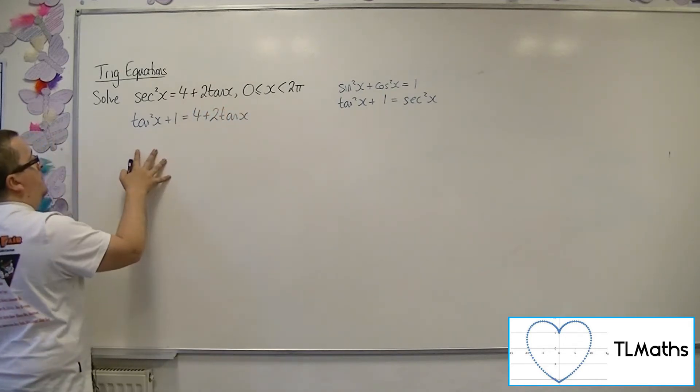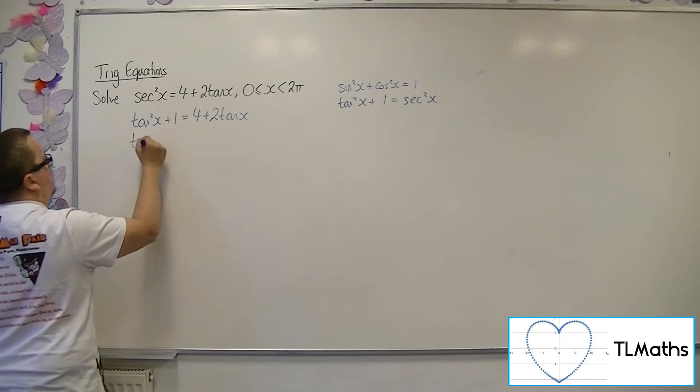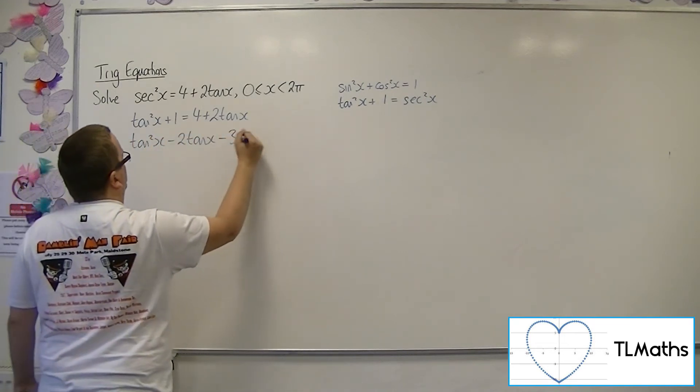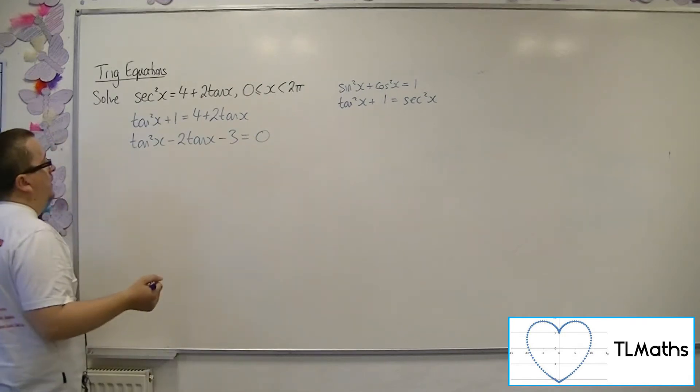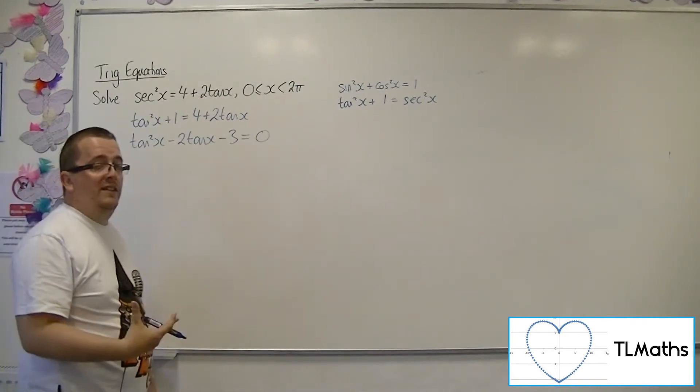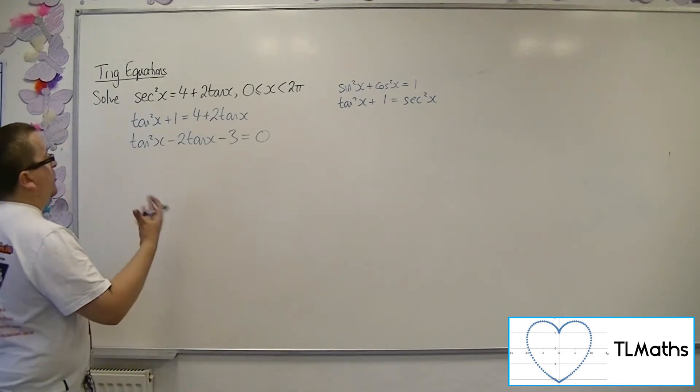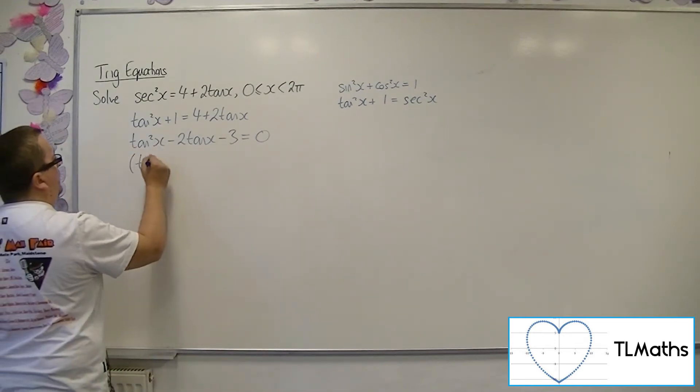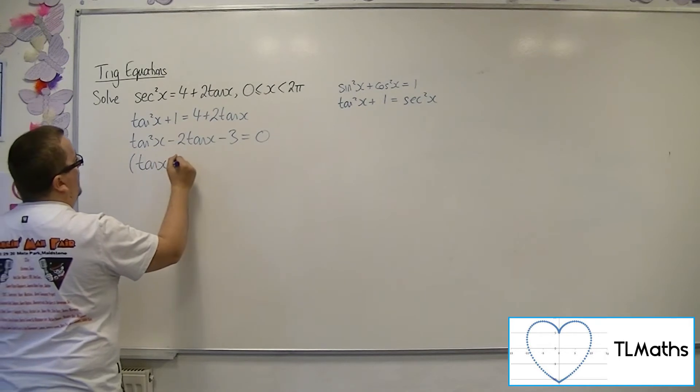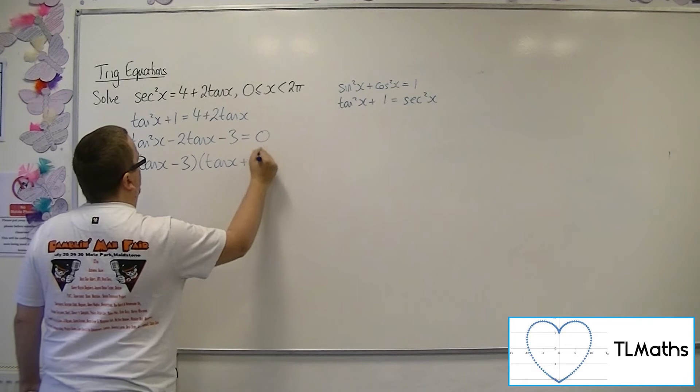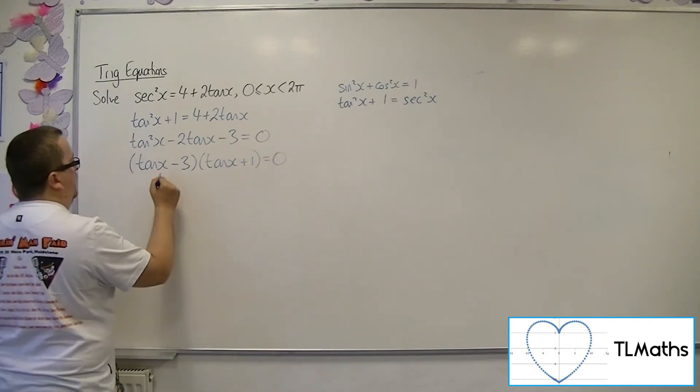Then I can throw everything onto the left-hand side of the equation to give myself a quadratic that just involves tan. So this is a quadratic that can be factorized, so that I would have tan x minus 3 times tan x plus 1 equals 0.